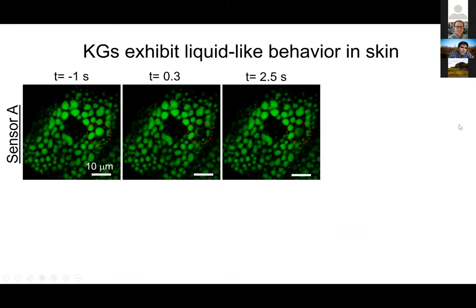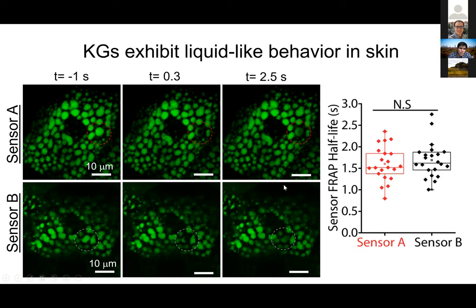One of the first things we had to do was probe the liquid-like behavior. Our sensors, localized to these compartments, allow photobleaching experiments. If we quantify the fluorescence recovery for both sensor A and sensor B, the sensor half-life is only a few seconds — 1.5 seconds recovery. So we bleach and only two seconds later there's almost complete recovery. These things are really mixing within those compartments — liquid-like at least in their internal dynamics.